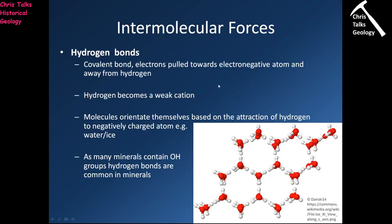When you have a molecule that contains water or the OH group, you will have hydrogen bonds. A hydrogen bond results in the hydrogens, which are electropositive, orientating themselves towards another atom which is electronegative. Looking at water, we can see the oxygen atoms are orientated to face a hydrogen — oxygen to hydrogen, oxygen to hydrogen, and so on.